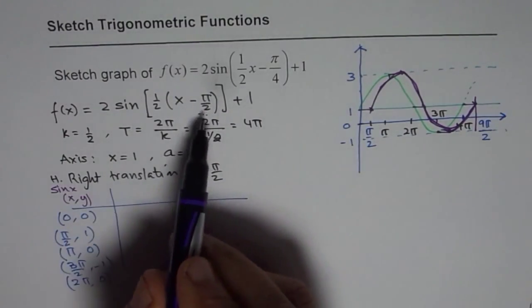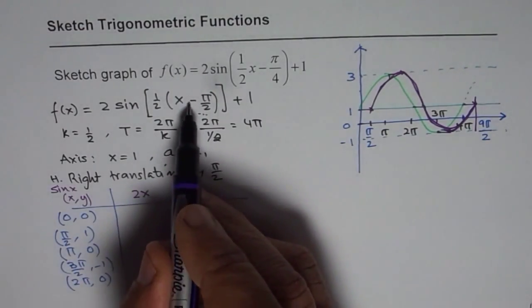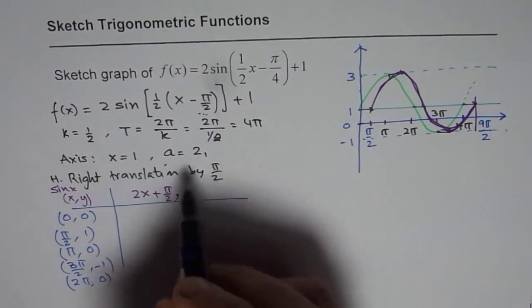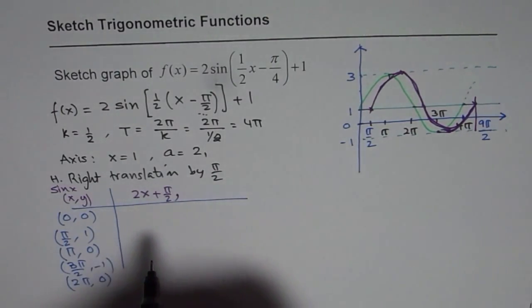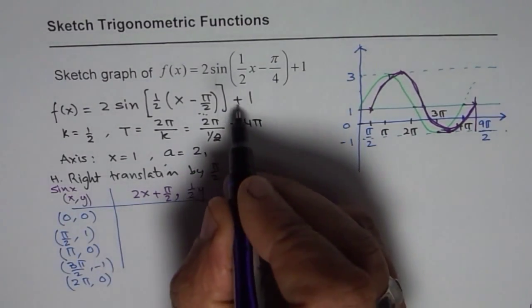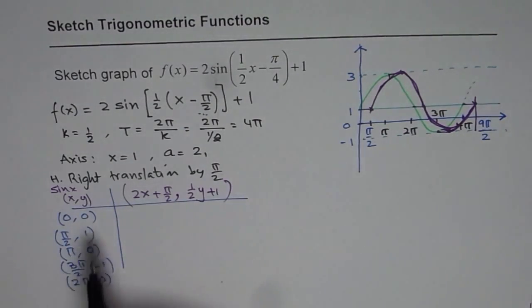So x points will get multiplied by two. So we will have 2 times x. And they will get subtract, means plus pi by 2. So that is how the x values will change. As far as the y values are concerned they will be divided by two. So we have half of y and plus one. So that is how the y values will change.